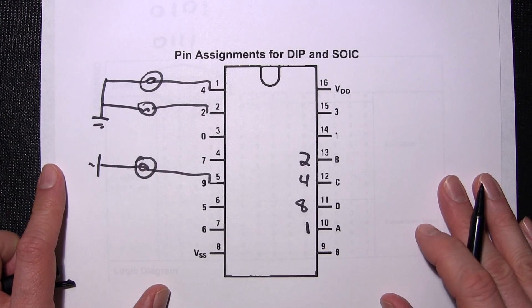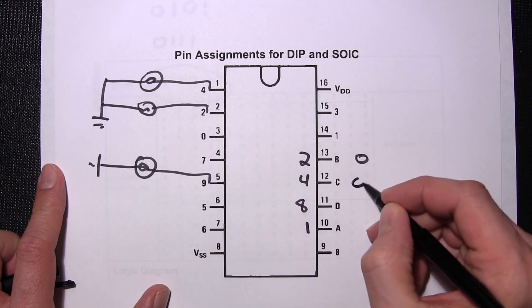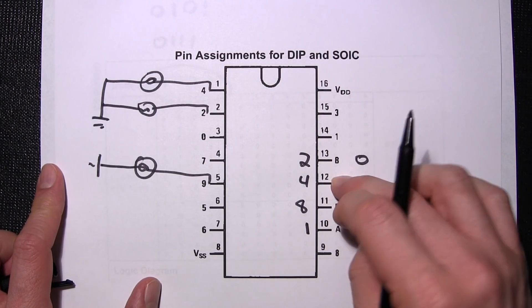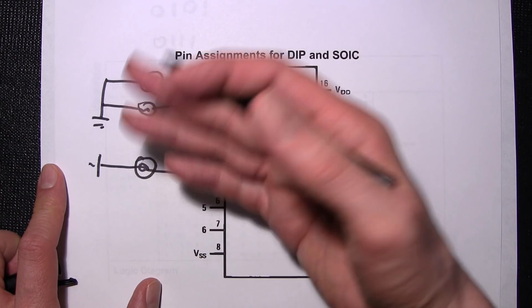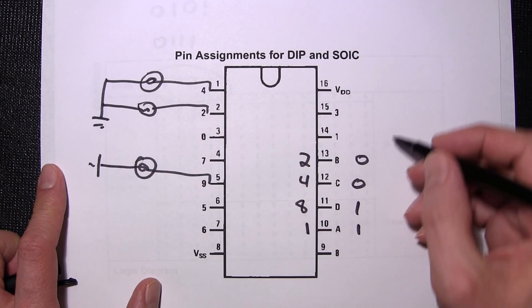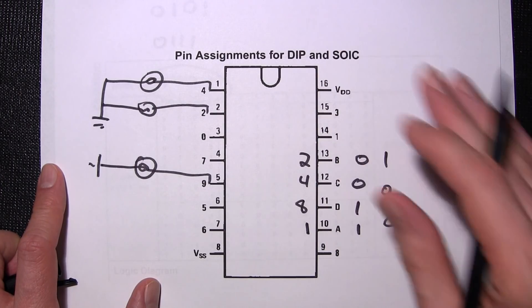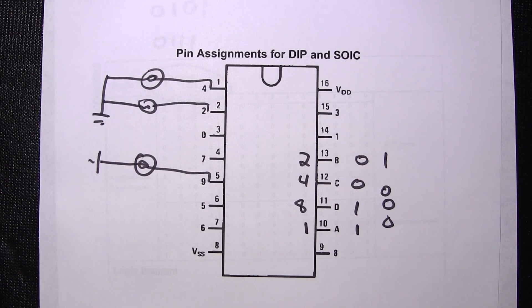Say I wanted to light up the number 9. So this would be 0, 0, 1, 1. That would be the way it goes. So these would be at ground, and these two would be at 5 volts, and that would be our code to light up number 9. If I wanted to light up number 2, it would be 1, 0, 0, 0. And that's how number 2 would light up. And that's really how this works. So let's take a look at this on an actual breadboard.